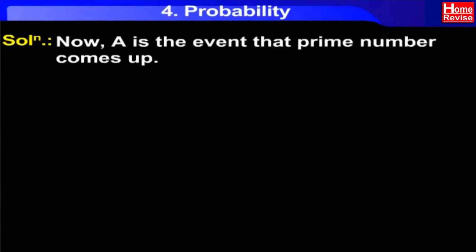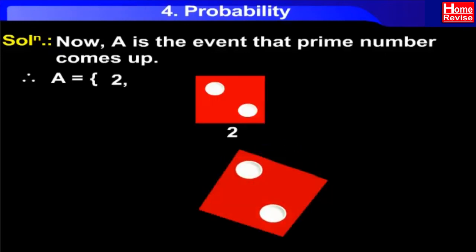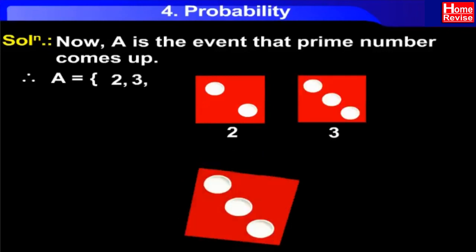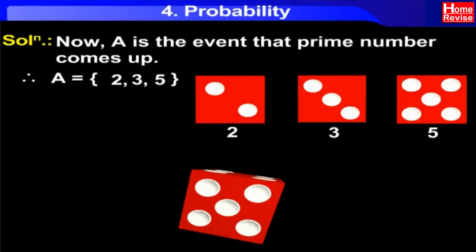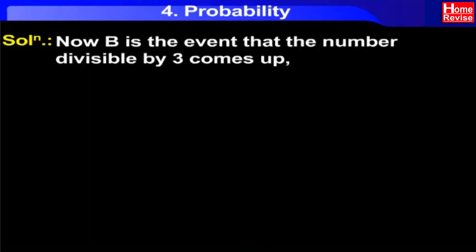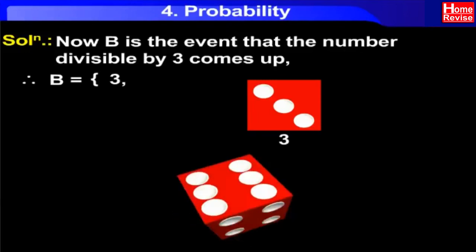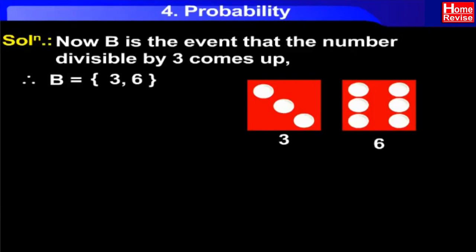Now, A is the event that a prime number comes up. Therefore, A = {2, 3, 5}. Therefore, N(A) = 3. Now, B is the event that the number divisible by 3 comes up. Therefore, B = {3, 6}. Therefore, N(B) = 2.